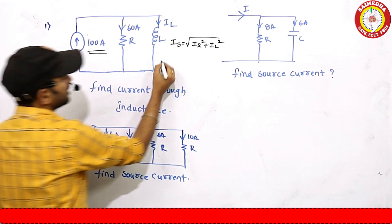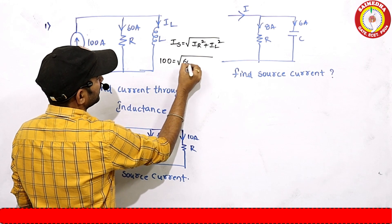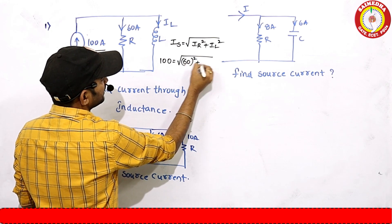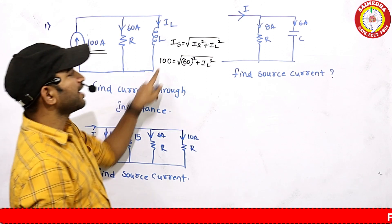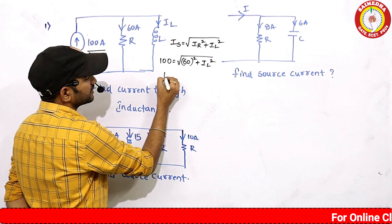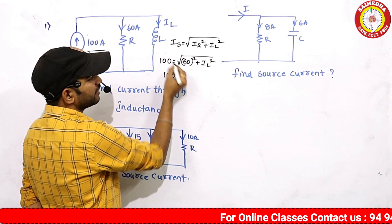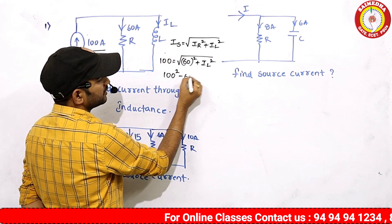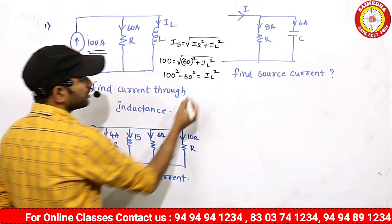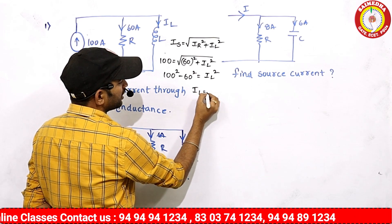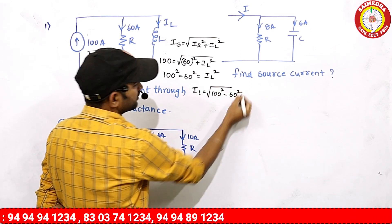Source current = √(IR² + IL²). The source current is 100A. That is equal to: √(IR² + IL²) = √(60² + IL²). So, here we go to 100² minus 60² equal to IL².